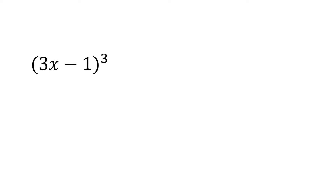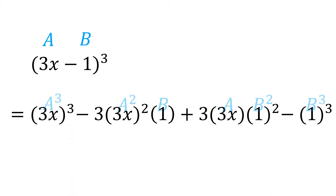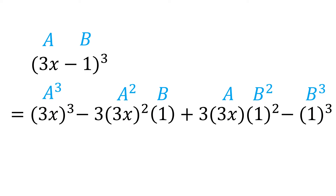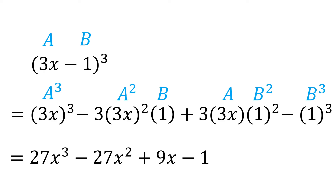Now let's say we have (3x minus 1) cubed. In this case, we have a as 3x and b as 1. Now instead of using the FOIL method, just take the cube of 3x, minus 3 times the product of the square of 3x and 1, plus 3 times the product of 3x and the square of 1, minus the cube of 1, which is equal to 27x cubed minus 27x squared plus 9x minus 1.